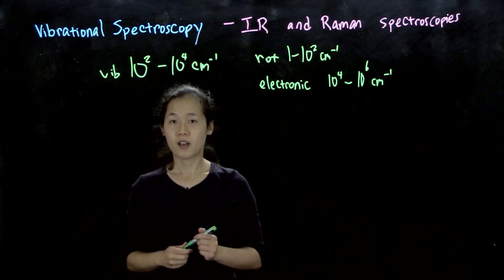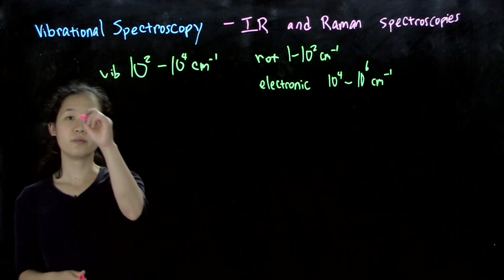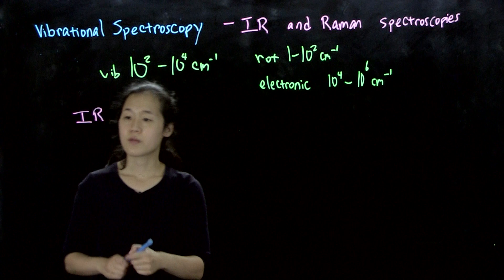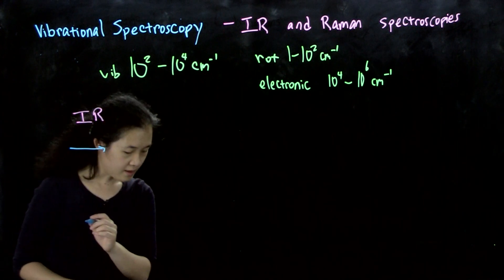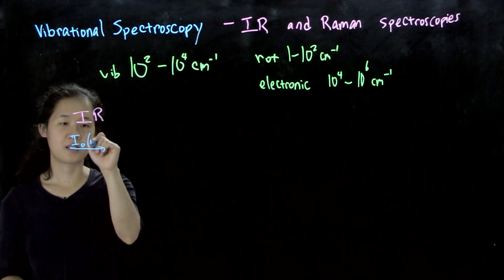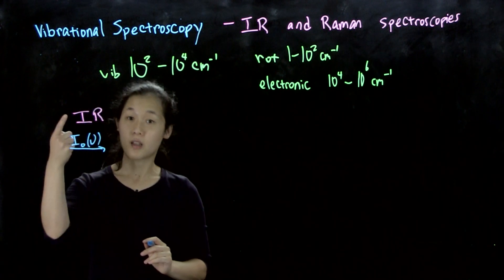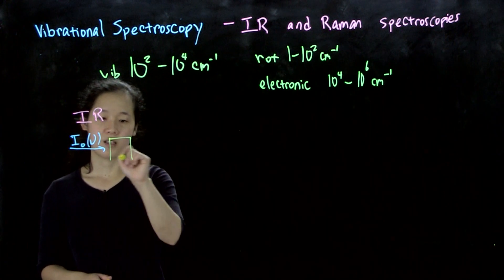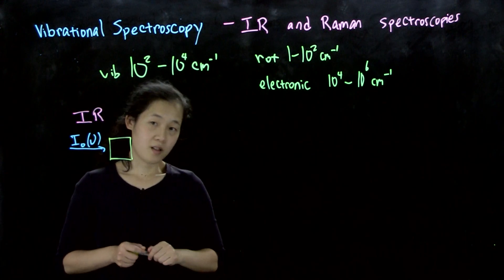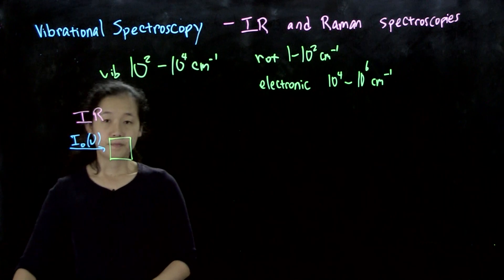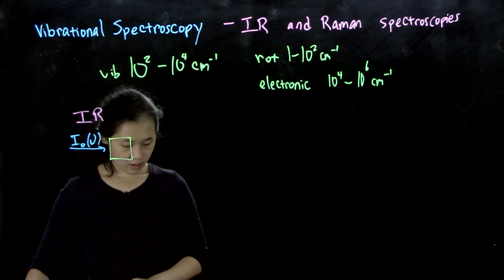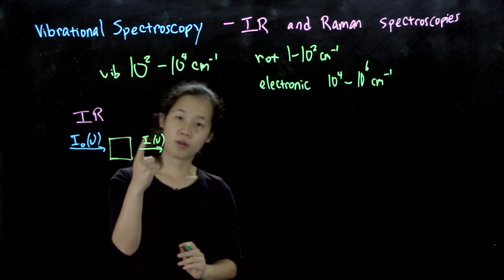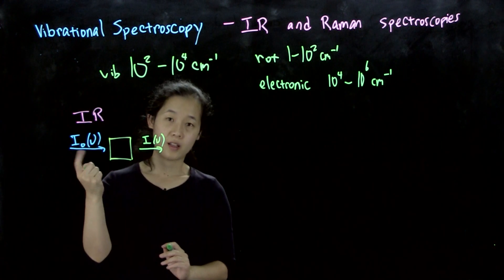Let's talk about the difference between IR and Raman spectroscopy. IR spectroscopy is a type of absorption spectroscopy. You have some input light at frequency I₀, and the energy of the light will be in the infrared region. Then you have your sample — in a KBr pellet, windows, solution, or a neat film. After the light gets absorbed by your sample, you get some intensity that comes out. You measure the ratio between incoming and outgoing intensity and write this as Beer's law.